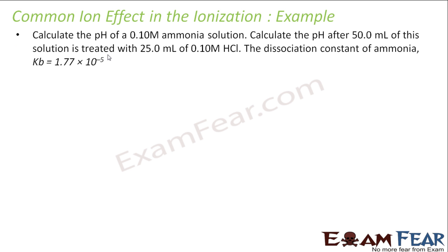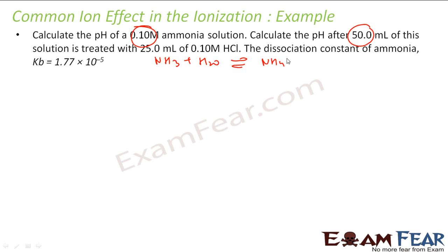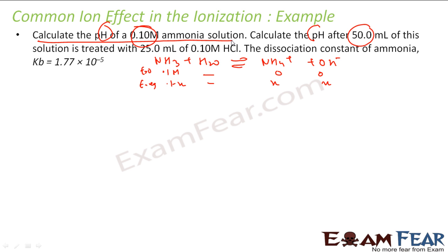Let's take some examples of the common ion effect. We have to calculate the pH of 0.1 M ammonia, and then calculate the pH after 50 ml of this solution is treated with 25 ml of 0.1 M HCl. The dissociation of ammonia is given. Ammonia is a base — it reacts with water and forms an equilibrium: NH3 + H2O ⇌ NH4+ + OH−. At t = 0, ammonia concentration is 0.1 M, NH4+ is 0, and OH− is 0. At equilibrium, NH3 is 0.1 − x, NH4+ is x, and OH− is x.